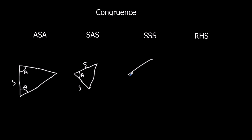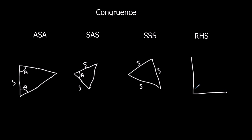The third is SSS — side, side, side. If we know all three sides, there's only one way to make a triangle; the sides have to join up, so SSS gives congruence. The fourth is RHS — right angle, hypotenuse, and one other side. If we have the hypotenuse and one other side in a right-angled triangle, we can work out the third side using Pythagoras, which means the triangles must be congruent.